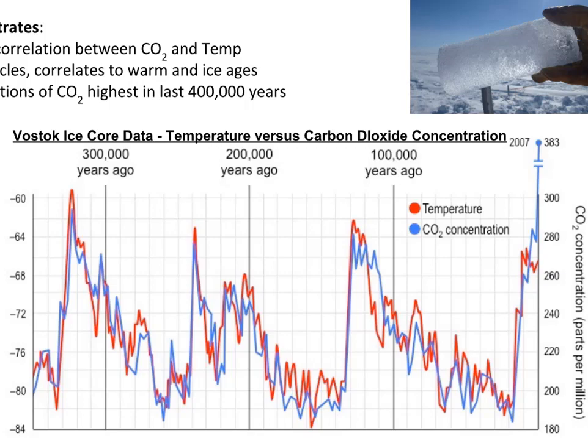Data collected from the Vostok ice core demonstrates a strong positive correlation between carbon dioxide concentrations and temperature — as CO2 levels increase, temperature increases. Additionally, there have been fluctuating cycles of carbon dioxide concentrations, which appear to correlate with global warm ages and ice ages. Current concentrations of carbon dioxide are higher than at any time recorded in the last 400,000 years.